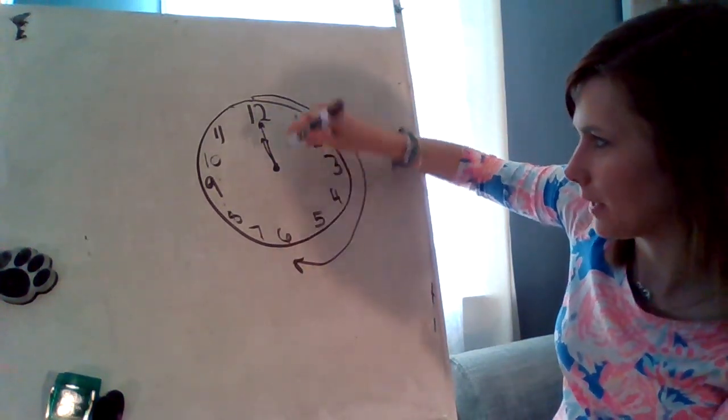I'm going to leave the bottom two for you to do. It says half past 8 — so you're looking for 8:30. And the bottom one says half past 4 — so you're looking for 4:30. Nice job. Turn the page.